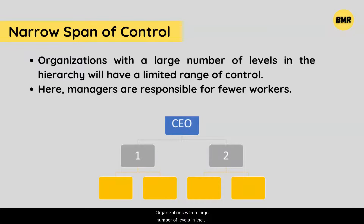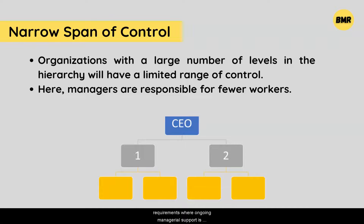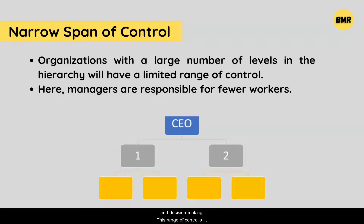Organizations with a large number of levels in the hierarchy will have a narrow range of control. Here managers are responsible for fewer workers. With complex work requirements where ongoing managerial support is required, a narrow span of control is very useful. The principal benefit of this control is simple management, planning, and decision making. The primary drawback is its cost — more managers equal higher expenses. More levels of hierarchy also result in communication delays.